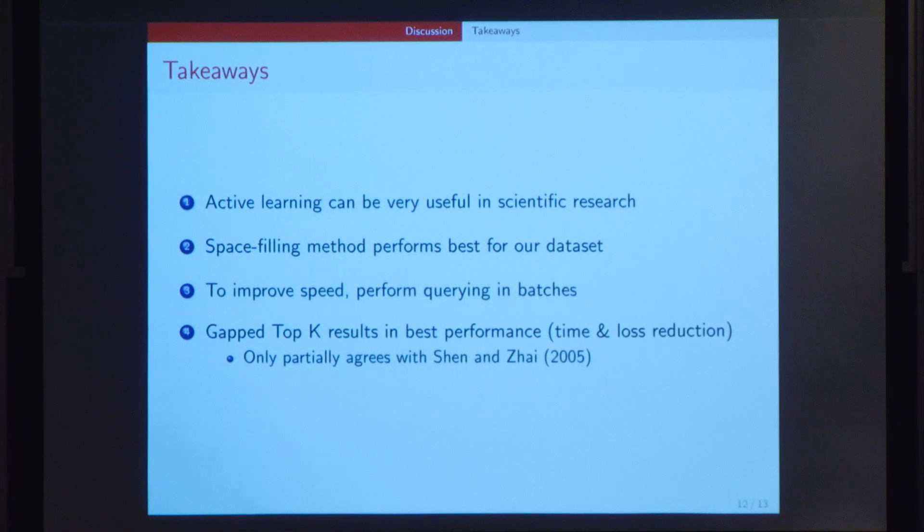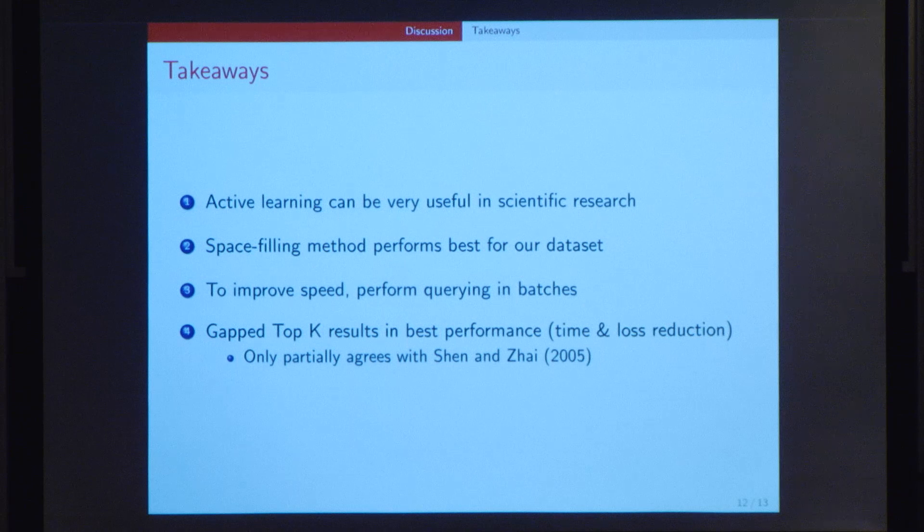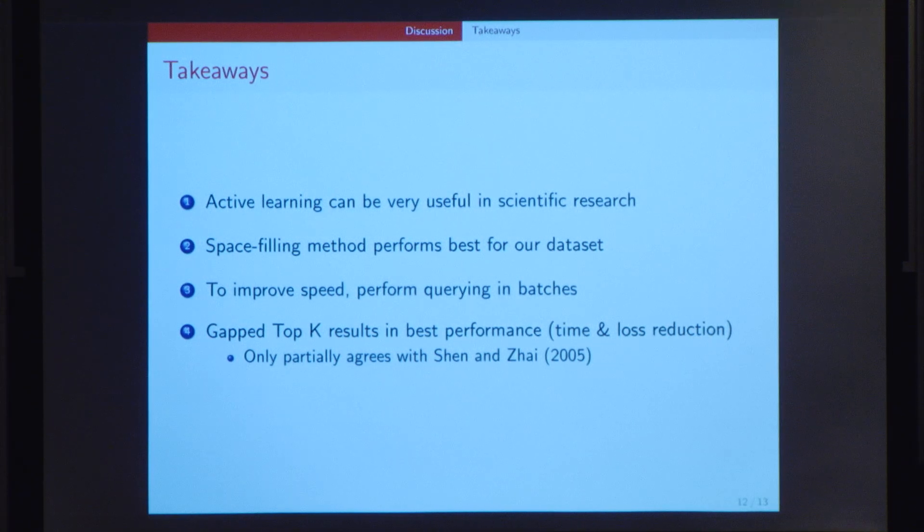Now this is actually a surprising result because it doesn't entirely agree with the findings of Shen and Zhai in 2005 in a research study they conducted. Although they as well found out that the top-K algorithm performs very poorly, they also discovered that the K-cluster-centroid algorithm performs the best, whereas our results clearly show that the gap top-K algorithm performs better in terms of both time as well as loss. That's something I found interesting as well.